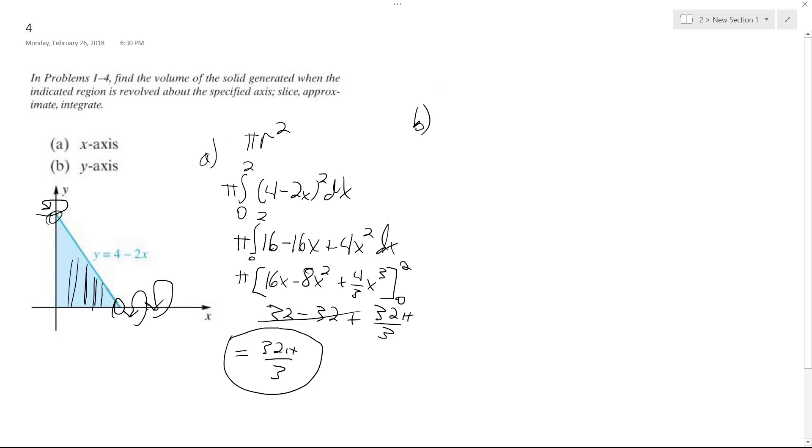Part B, you just solve for y. So in that instance, what you do is you have y is equal to four minus two x.